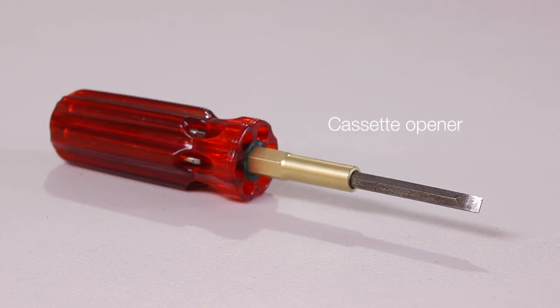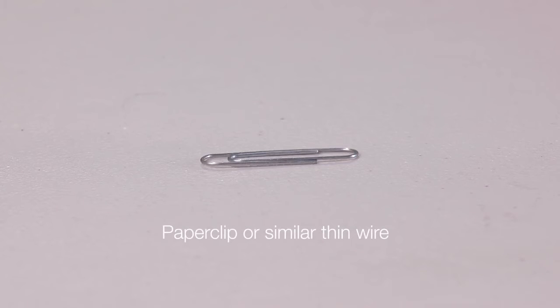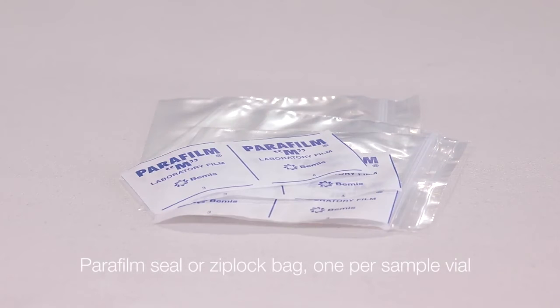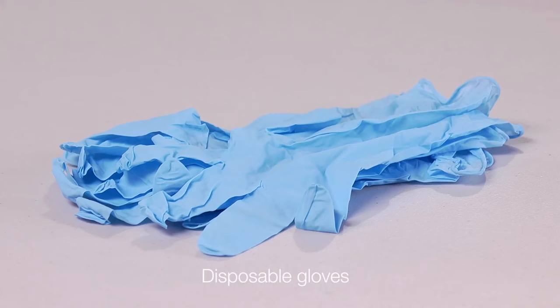Cassette opener, a screwdriver, coin or other flat tool, paper clip or similar thin wire, tweezers or forceps, parafilm seal or ziploc bag one per sample vial, and disposable gloves.